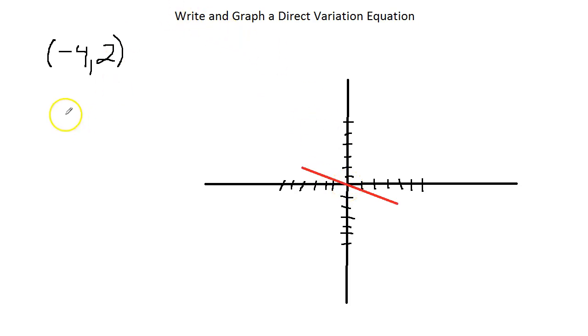So, for example, what we're just going to do is we're just going to use that 0, 0. So, our slope is our y value, 2, over our x value, because it's change in y over change in x, negative 4, reduce, and we get negative 1 half.